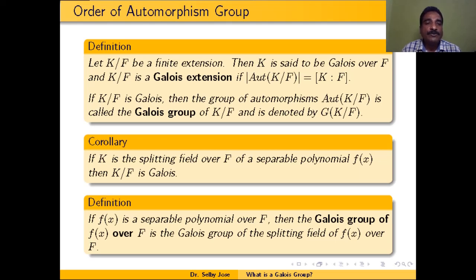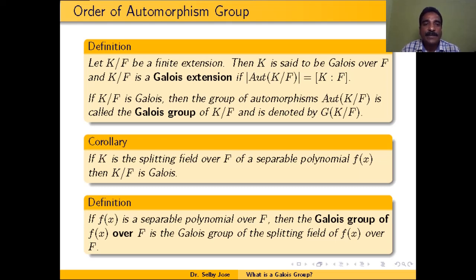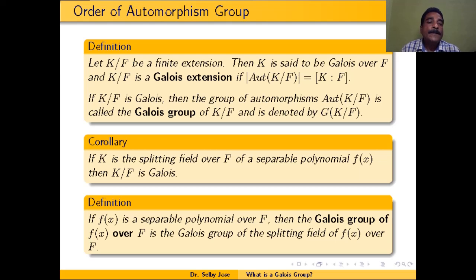If K/F is Galois, then the group of automorphisms Aut(K/F) is called the Galois group of K/F, denoted Gal(K/F). By the above theorem, the corollary is: if K is the splitting field over F of a separable polynomial f(x), then K/F is Galois, because the order of Aut(K/F) equals [K:F]. And if f(x) is a separable polynomial over F, the Galois group of f(x) over F is defined as the Galois group of its splitting field K over F, i.e., Gal(K/F).